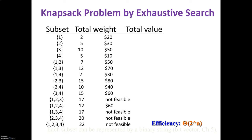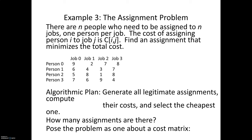The next example of exhaustive search is the Assignment Problem. This is also a combinatorial problem where you find permutations. There are n people who need to be assigned to n jobs, one person per job. The cost of assigning person i to job j is C[i][j]. For example, assigning person 1 to job 2 has cost 3; assigning person 3 to job 3 has cost 4. You are required to find an assignment that minimizes the total cost.